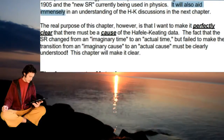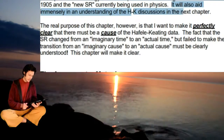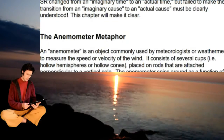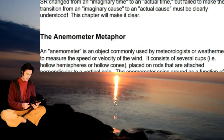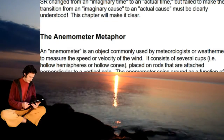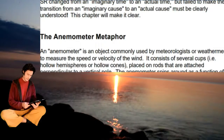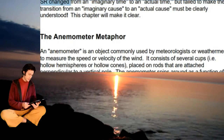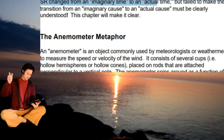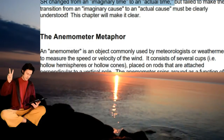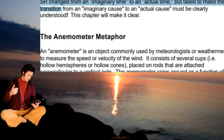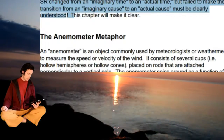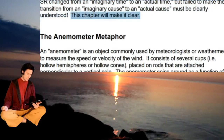It will also aid immensely in an understanding of the Hafele-Keating discussion in the next chapter. The real purpose of this chapter, however, is to make perfectly clear that there must be a cause of the Hafele-Keating data. The fact that special relativity changed from an imaginary time to an actual time, but failed to make the transition from an imaginary cause to an actual cause, must be clearly understood. This chapter will make it clear.